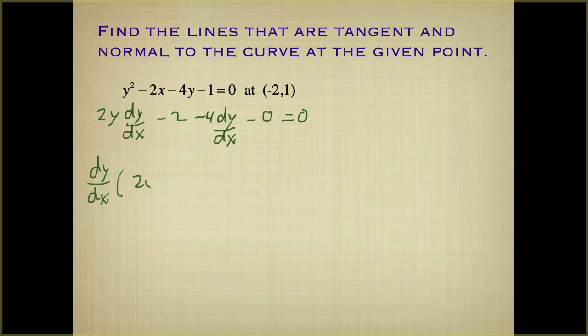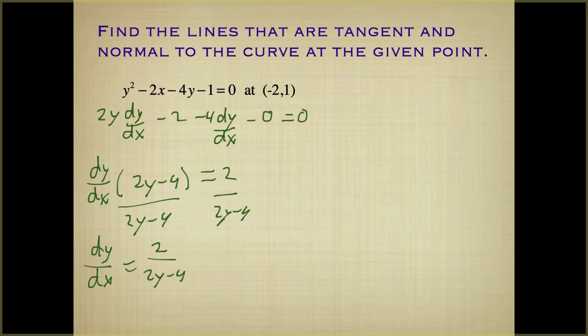And when you do that, you get 2y minus 4. We added 2 to both sides, so it equals 2. Divide it out. And you get dy dx is 2 over 2y minus 4.